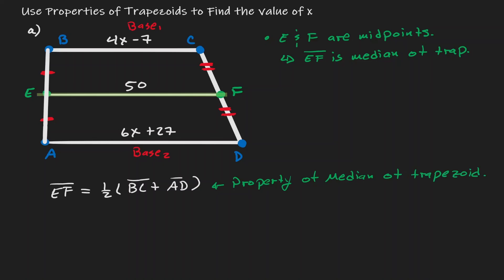Now let's plug in what we know. EF is 50, BC is 4x minus 7, and AD is 6x plus 27. And now at this point we can solve for x.